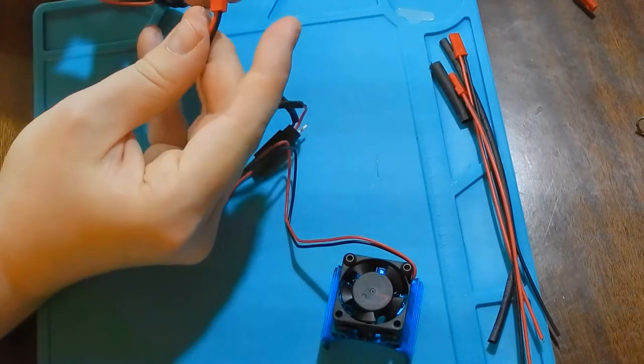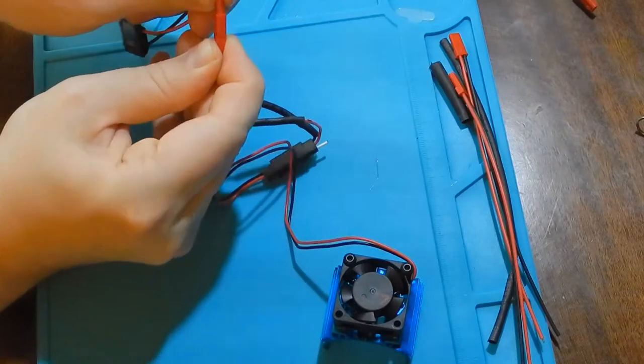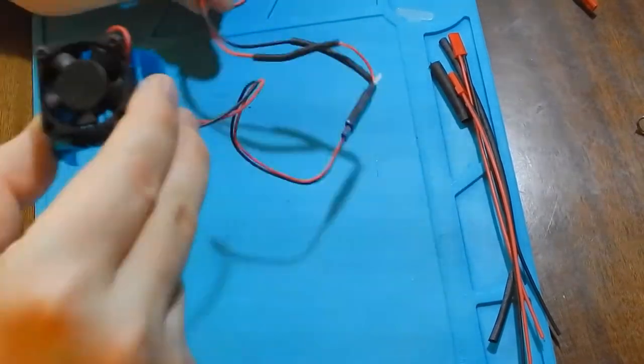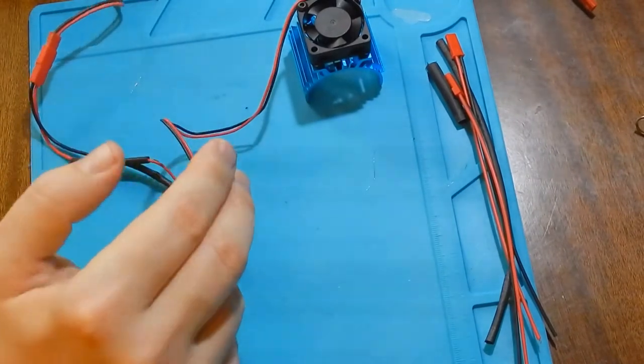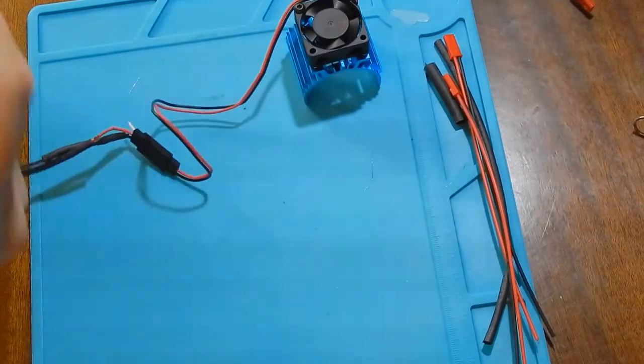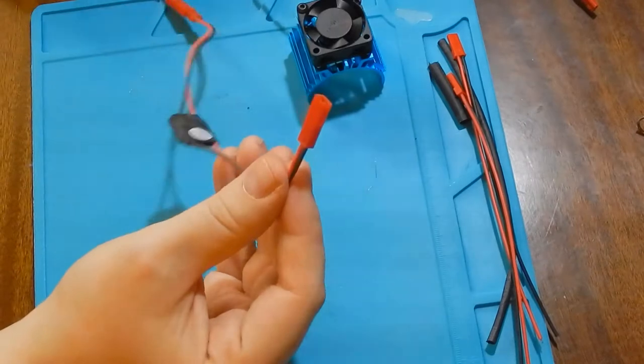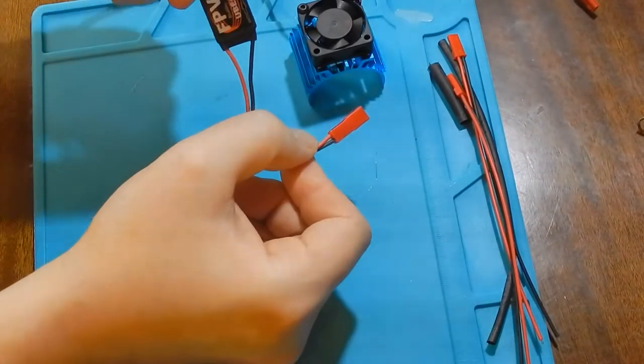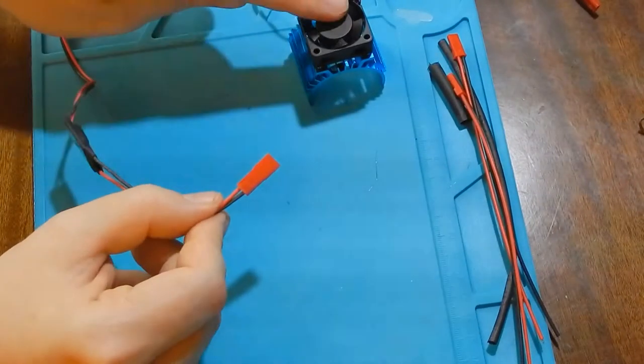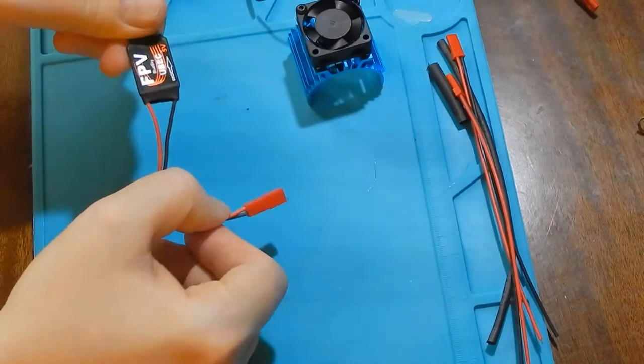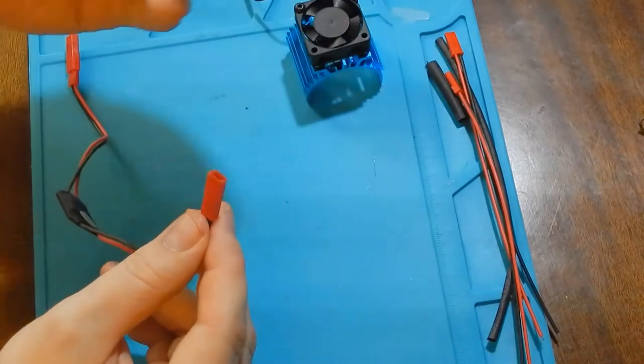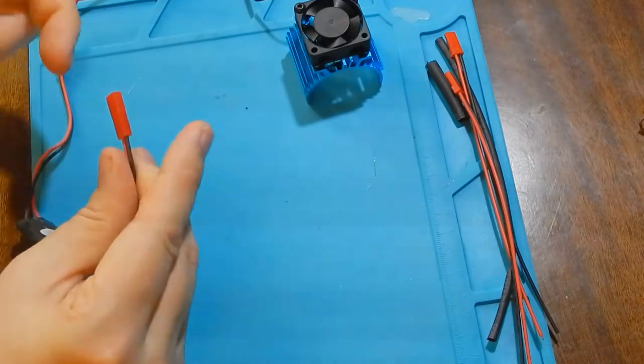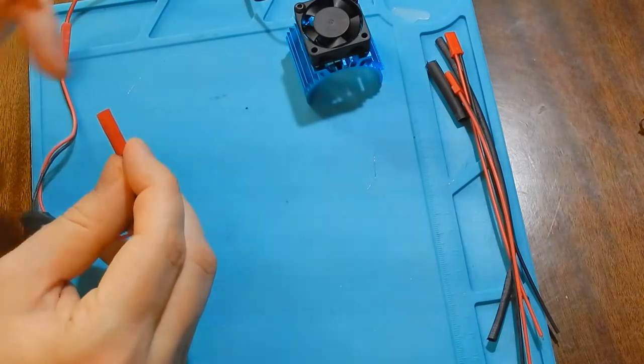For testing, I will use one 2S 7.4V battery and 5V brushed motor. Here, the UBEC will step down the voltage from the battery to 5V.